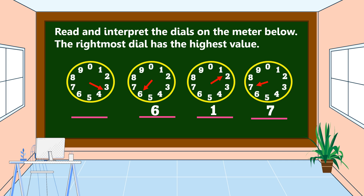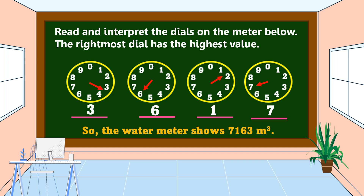Lastly, the arrow is in between three and four, so we record the lower number. Therefore, the answer is three. Writing the numbers from right to left, the water meter shows 7,163 cubic meters.